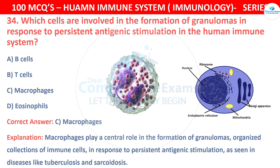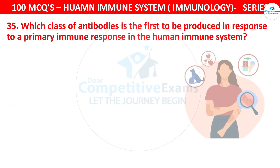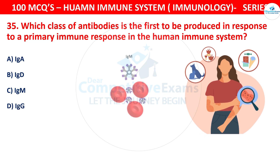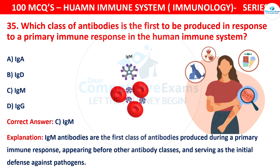Question 35: Which class of antibodies is the first to be produced in response to a primary immune response in the human immune system? The options are IgA, IgD, IgM, or IgG. The correct answer is C, that is IgM. IgM antibodies are the first class of antibodies produced during a primary immune response, appearing before other antibody classes and serving as the initial defense against pathogens.